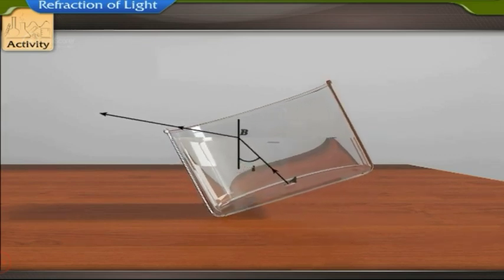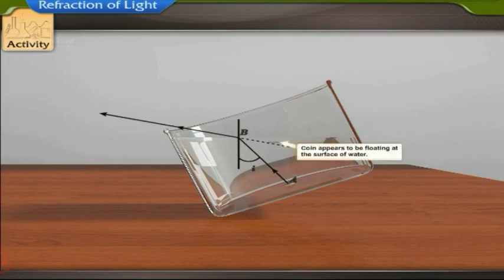If the jar is further tilted at a suitable angle called the critical angle of incidence, the ray AB gets deviated away from the normal and grazes just along the surface of water and the coin is felt to be floating on the surface.